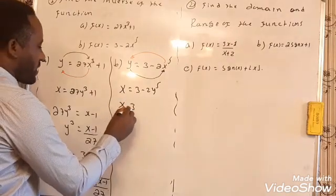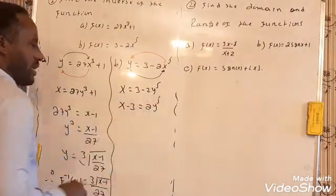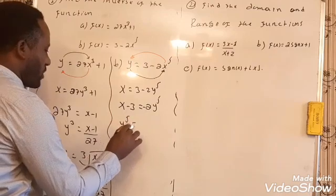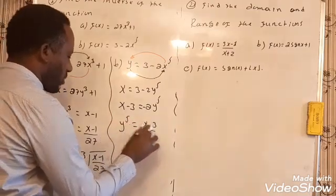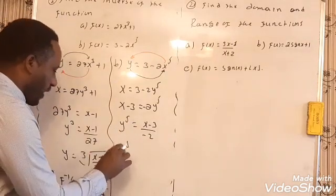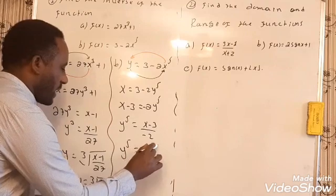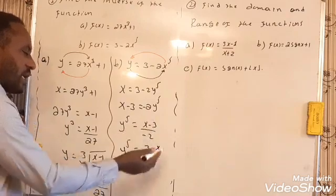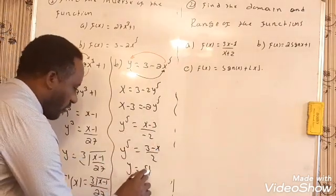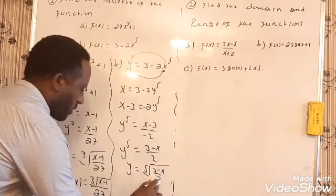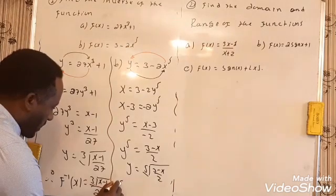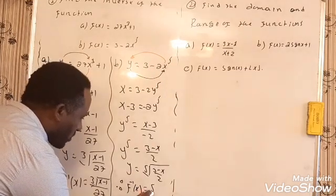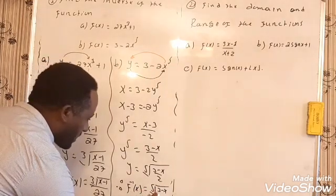Now x − 3 = −2y⁵, so y⁵ = (x − 3) / (−2) = (3 − x)/2. Therefore y = the fifth root of (3 − x)/2. Therefore f⁻¹(x) = ⁵√((3 − x)/2). This is how we determine the inverse of this problem.